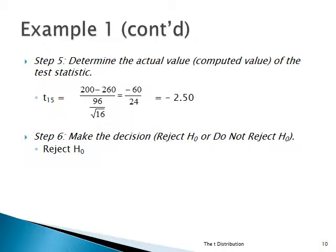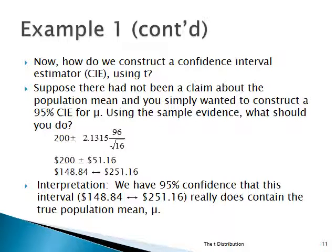We reject H0. Now, there are kind of two ways to do inference. One way is to test the hypothesis that the claim was made. If no claim was made, you just want to take the sample evidence and construct a confidence interval. With t, you're going to have to use the critical value for t, which is 2.1315. You can't use 1.96 — and notice the price you pay is a wider interval.